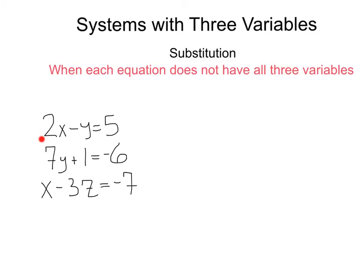Notice that this system has three different variables, x, y, and z, but each equation does not have all three of those. We've got 2x minus y equals 5, 7y plus 1 equals negative 6, and x minus 3z equals negative 7. The first thing I'm going to recommend you do is find an equation where you could easily isolate one variable.